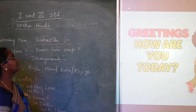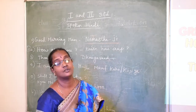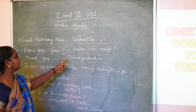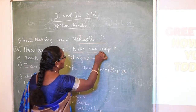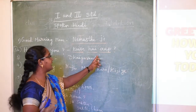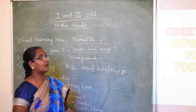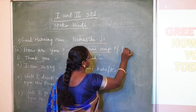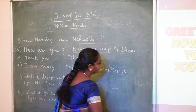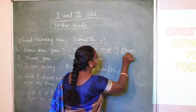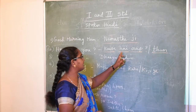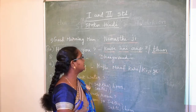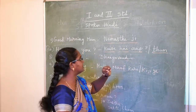Next, how do you greet your friends, or a guest at your home? In English you ask 'How are you?' In Hindi, when asking an elder, you say 'Kaise hai aap?' — 'aap' is the respectful plural form. When asking a friend, you say 'Kaise hai tum?' — 'tum' is the singular form.